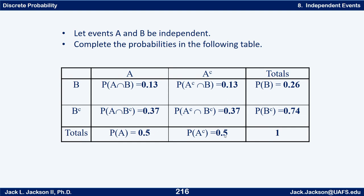Let's check that everything works out. The column totals: 0.13 plus 0.37 is 0.5 — true here and here. 0.26 plus 0.74 is 1. The row totals: 0.13 plus 0.13 is 0.26; 0.37 plus 0.37 is 0.74; and 0.5 plus 0.5 is 1. The products should work since it's independent: 0.5 times 0.26 is 0.13; 0.5 times 0.74 is 0.37; and we see that everything checks out.